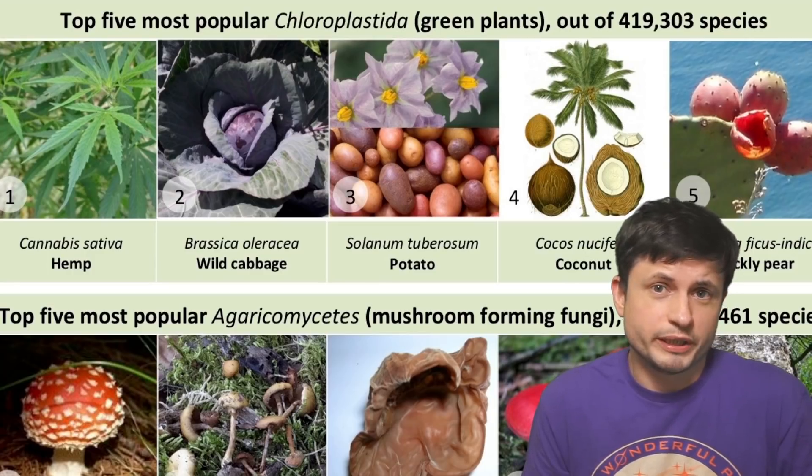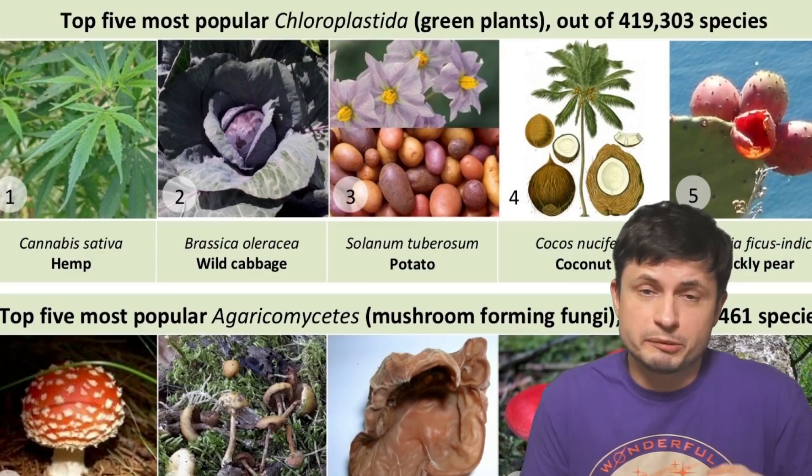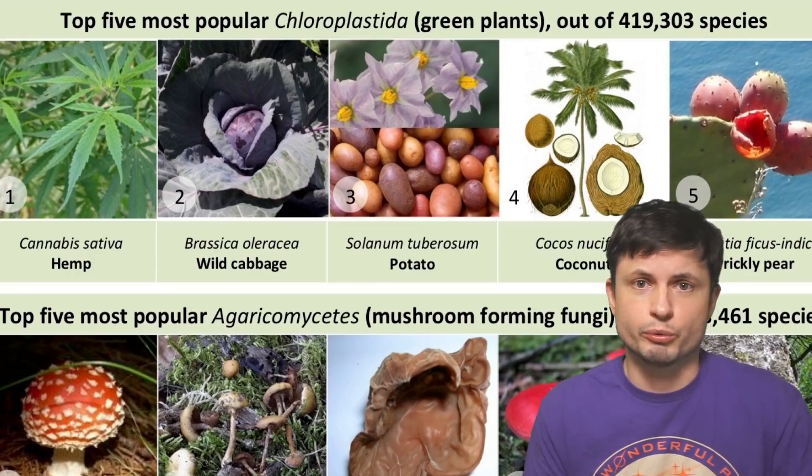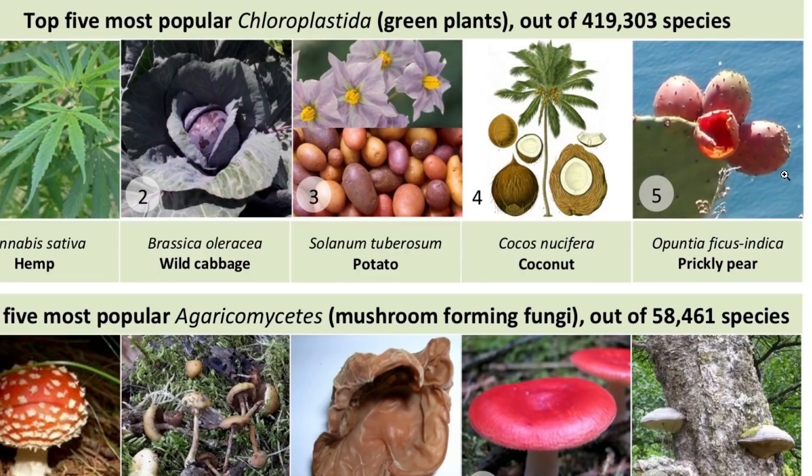Also naturally, weed turned out to be the most popular plant, with cabbage and potato coming relatively close as well. Although why prickly pear is number five is a bit of a mystery to me.